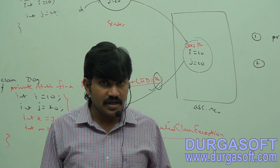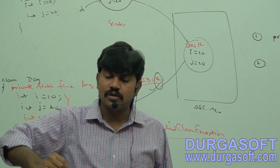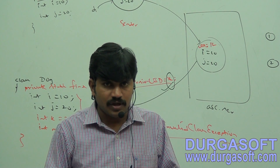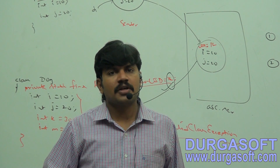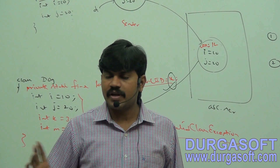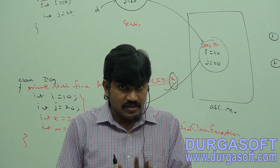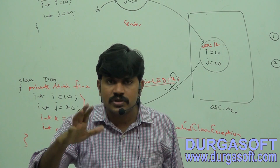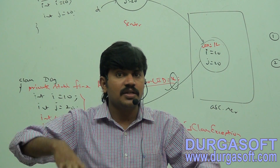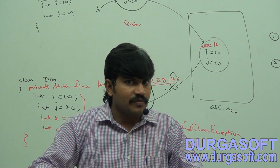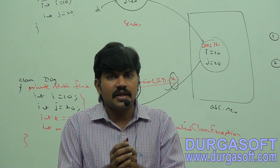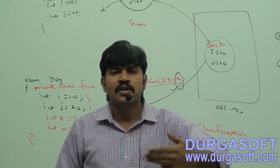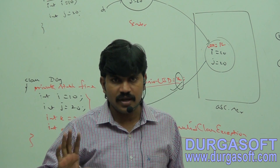With this, the total serialization concept is complete. Better to review all the videos — around 14 to 15 videos — at least twice or thrice, and then you will automatically get confidence. This is one area, along with externalization and serial version UID, where most people lack knowledge. Revising these videos will give you much confidence in the subject.